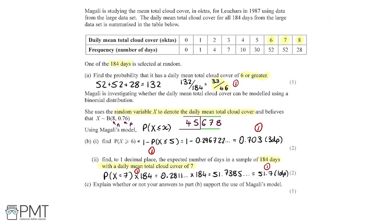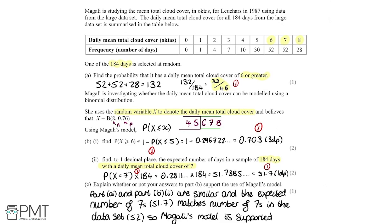Part C asks us to explain whether our answers to part B support the use of Magali's model. Comparing part A and part B(i): part A gave a probability of 33/46 = 0.717, and the model gave 0.703 — these are relatively close, suggesting the model is likely accurate. Also, the expected number of days with cloud cover 7 from the model is 51.7, compared to 52 in the actual data — again very similar. So Magali's model is supported, and we get one mark for this conclusion.